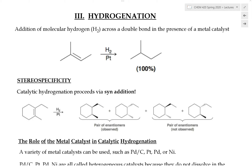Here, we will restrict our discussion to the hydrogenation reaction of alkenes. This is a type of addition reaction in which molecular hydrogen — two hydrogen atoms — are being added across the carbon-carbon double bond.